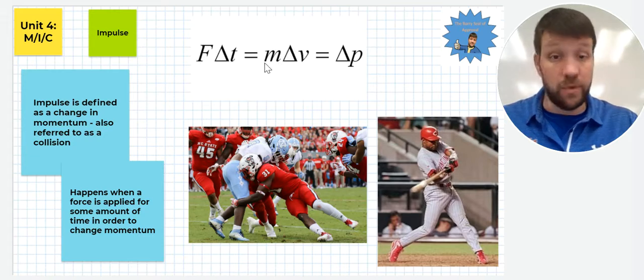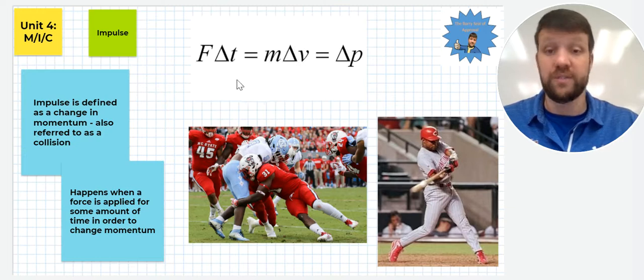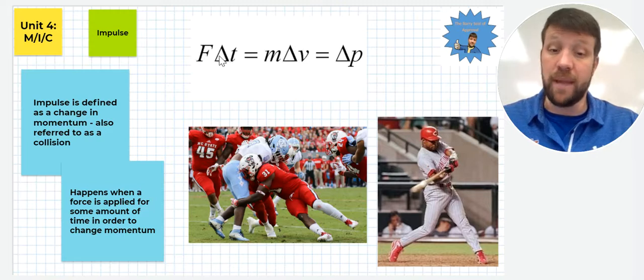We see a force applied for some amount of time—that equals our momentum change that we just looked at in the previous slide, and that's our delta P. So a change in momentum causes a velocity change of some mass, and that happens typically because a force is applied for some amount of time.